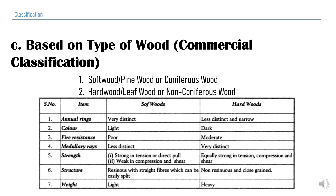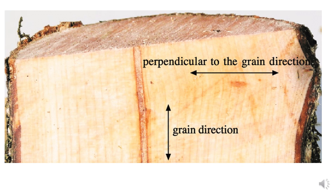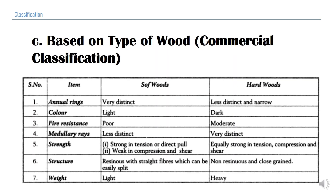Regarding strength: in a cross-section of timber, when cut in the longitudinal direction, the grains run along the length. Strength along the grain direction and perpendicular to it is always studied. Softwood is strong in tension or direct pull along the grain direction but weak in compression and shear in the perpendicular direction. Hardwood has thick, closely packed grains, so it is strong in tension, compression, and shear.